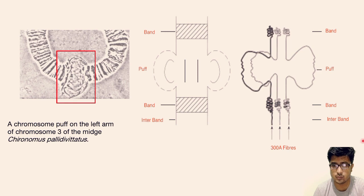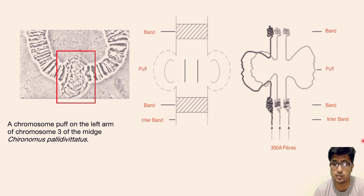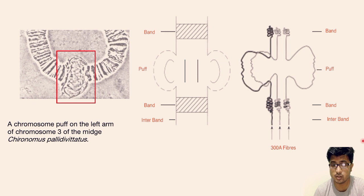In Drosophila, about 80% of the puffs are stage-specific — they form at particular stages to support the organism and then disappear. This is not a permanent or stable structure. At a particular developmental stage they appear again to support the organism.